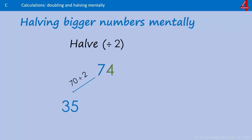What's half of 70? That's 35. What's half of 4? That's 2. 35 add 2 is 37. 37 is half of 74.